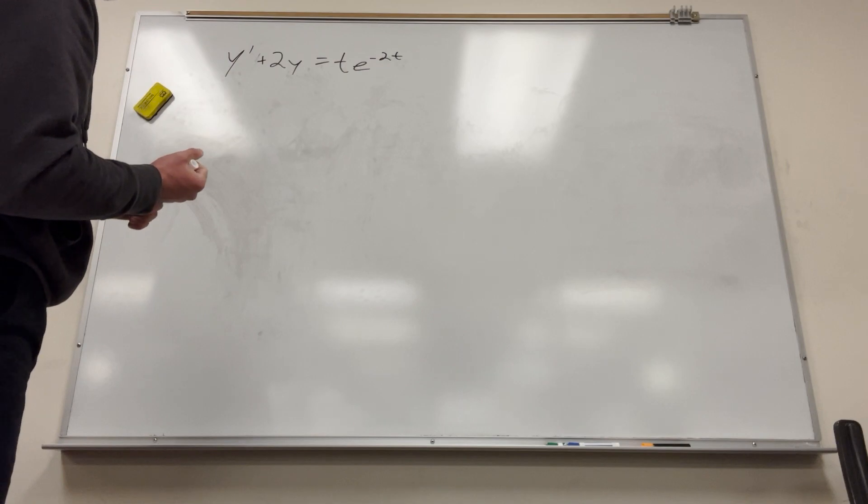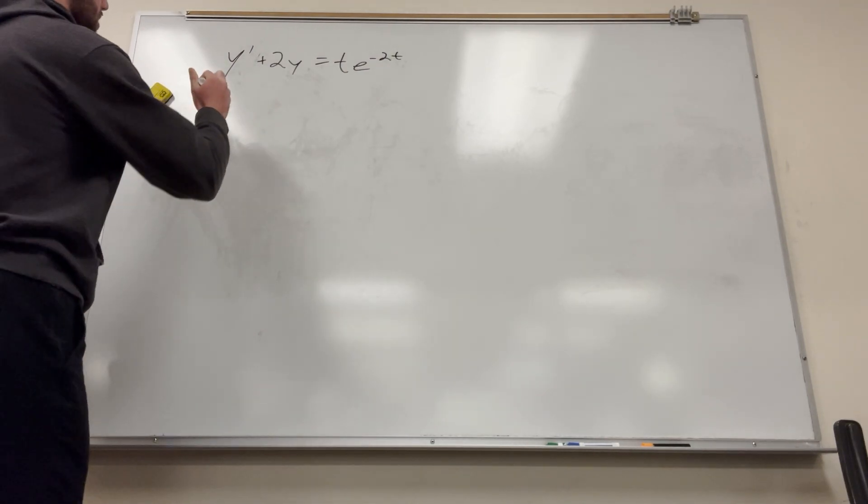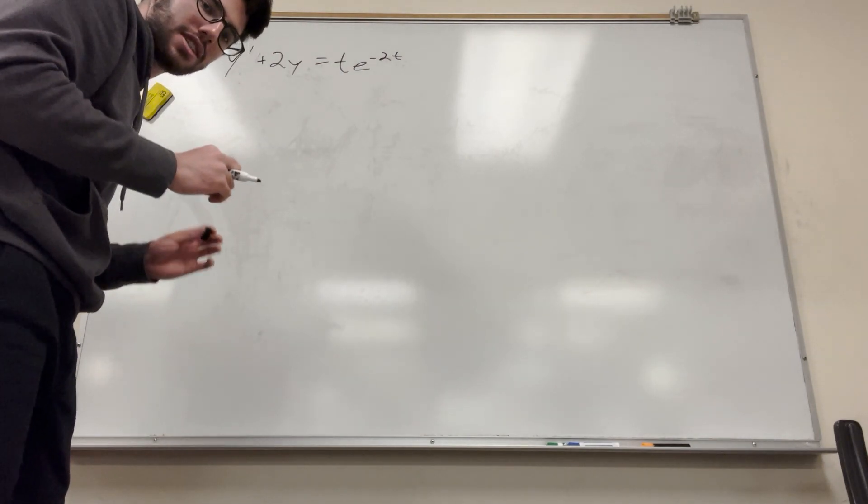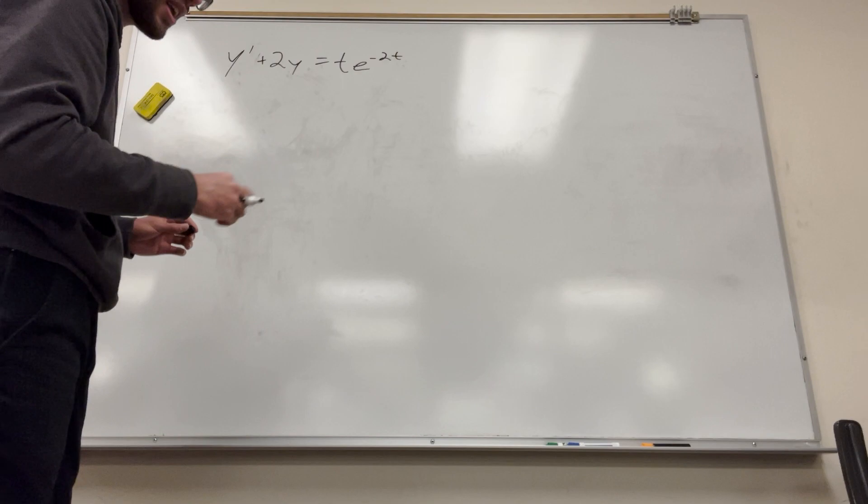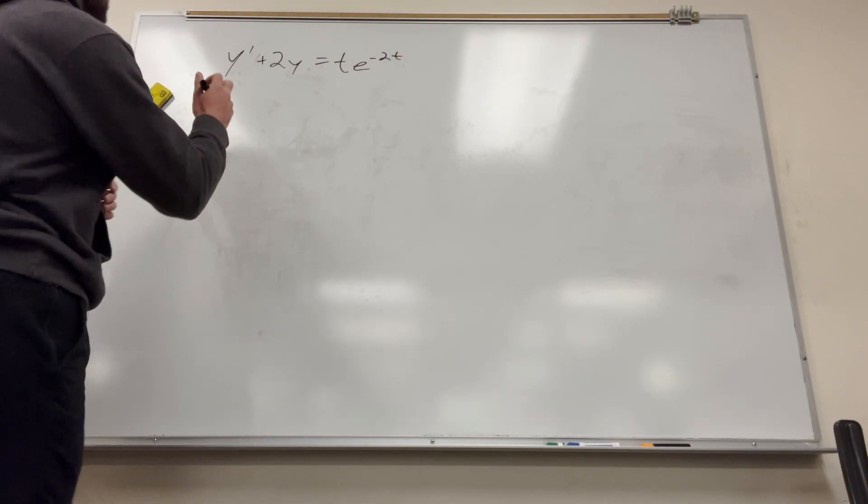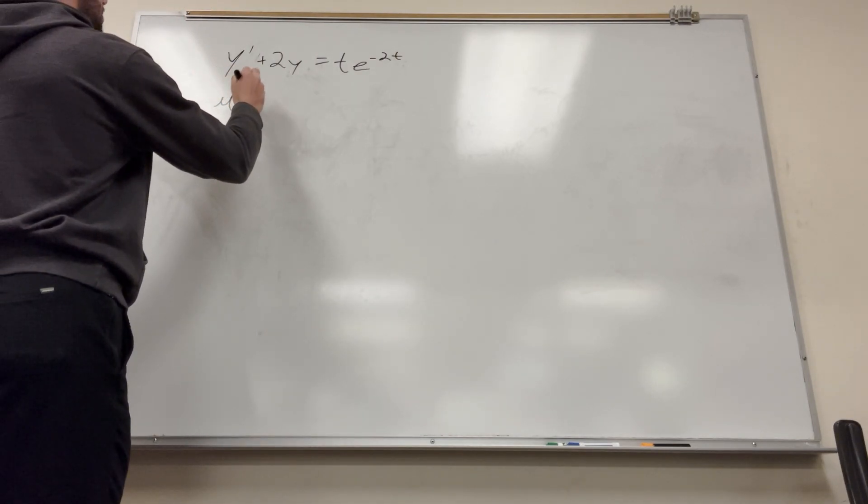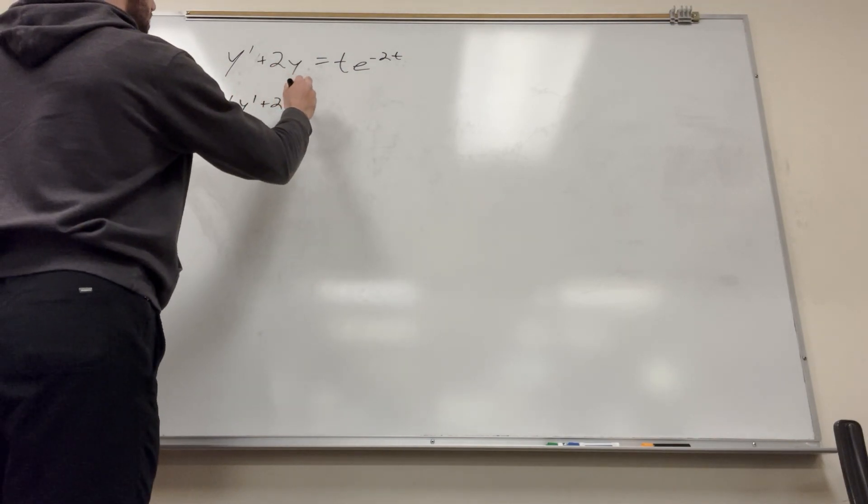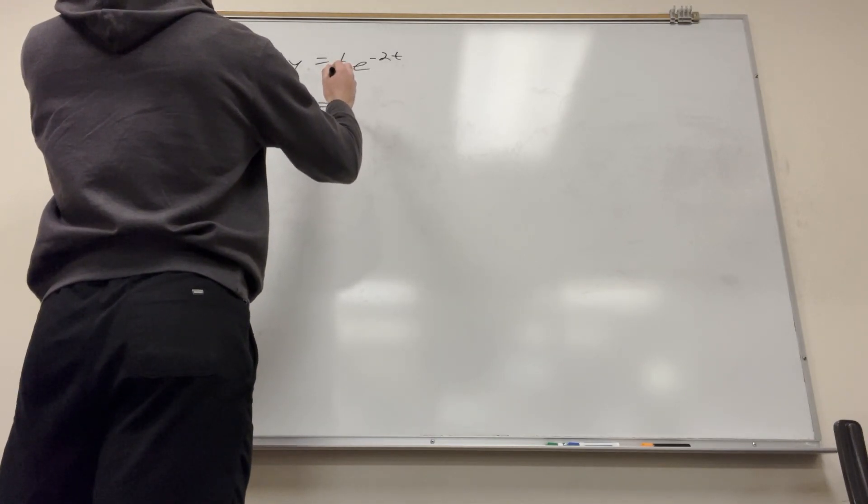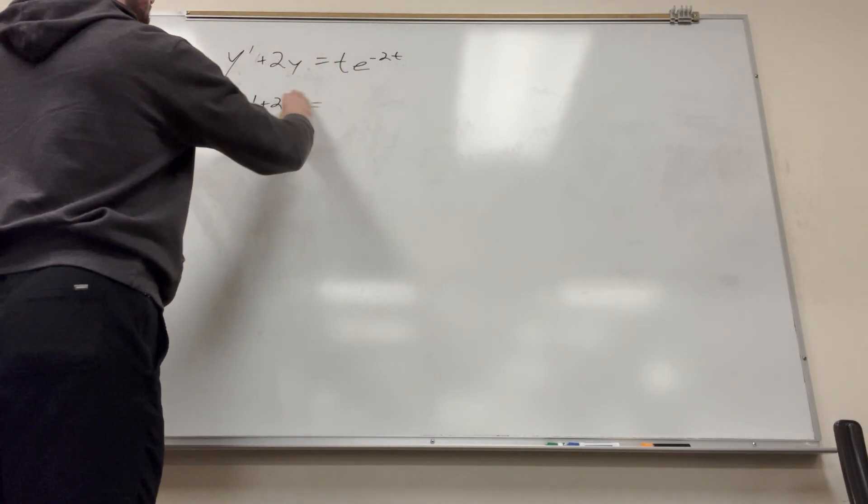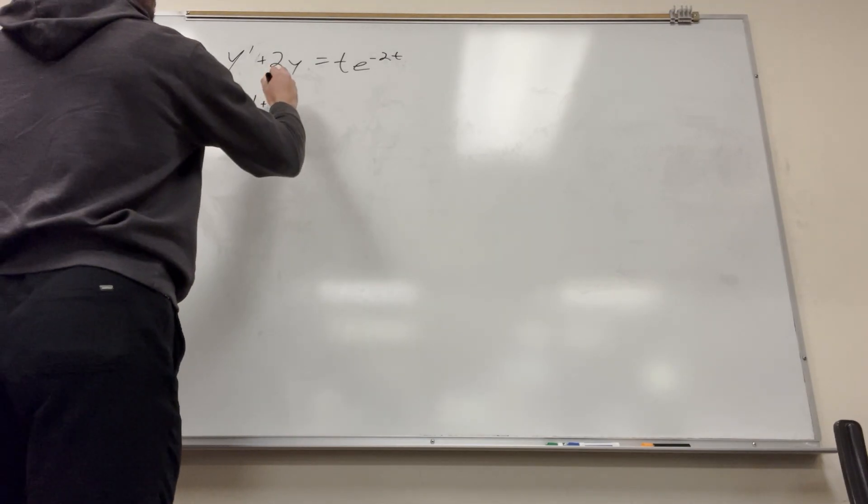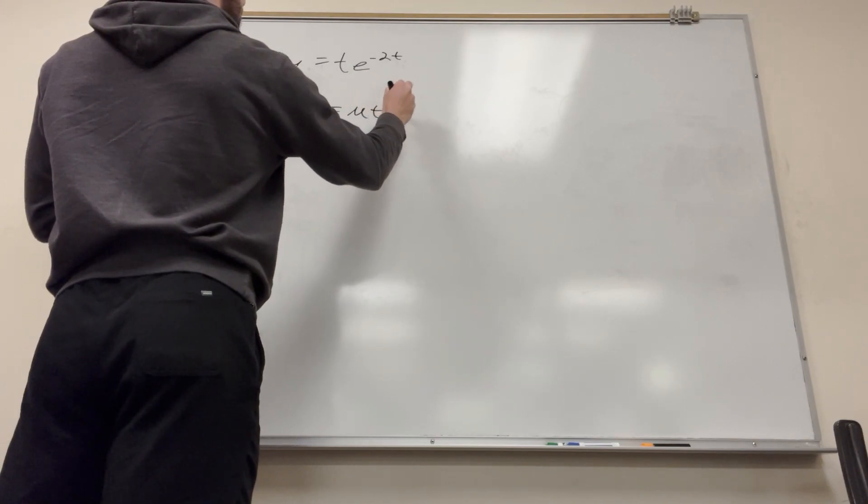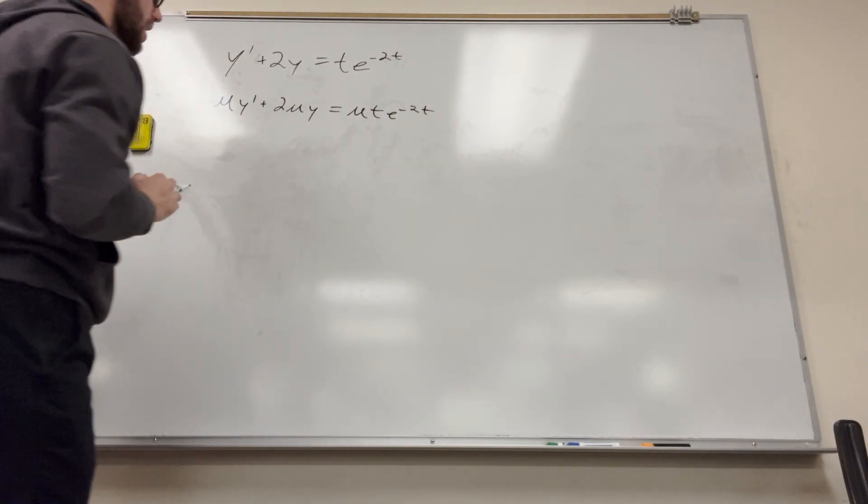So the first step is going to be multiplying both sides by mu, the Greek character mu. You guys might have learned it a different way. You might not have learned this at all. I'm going to try to explain it in a pretty simple way, the method of how to do it and why it works. So we have mu y prime plus 2 mu y is equal to mu t e to the negative 2t.